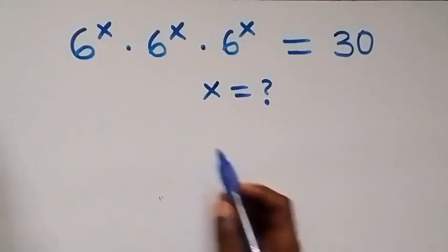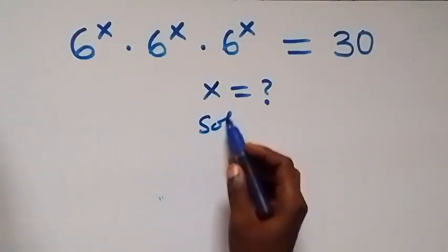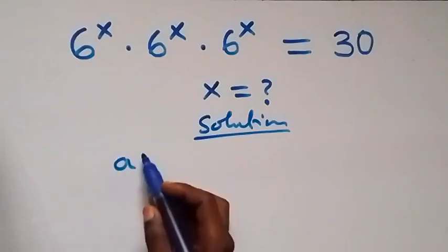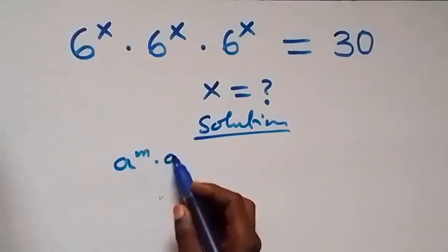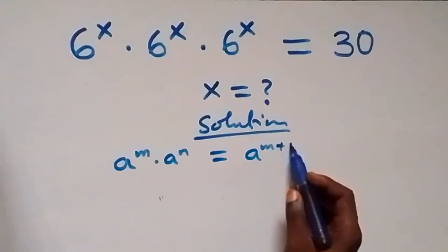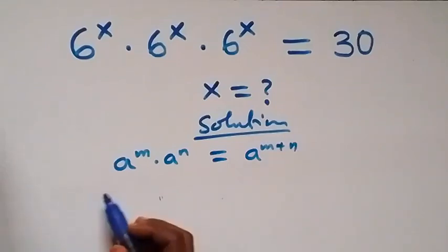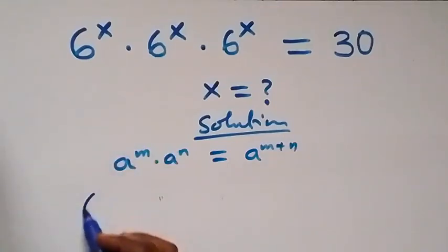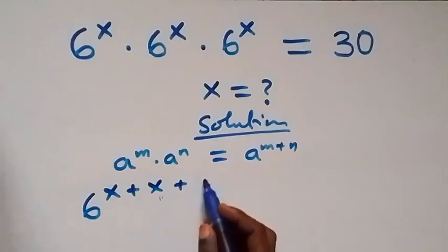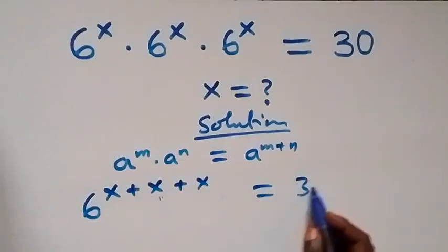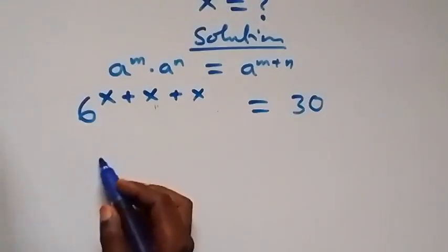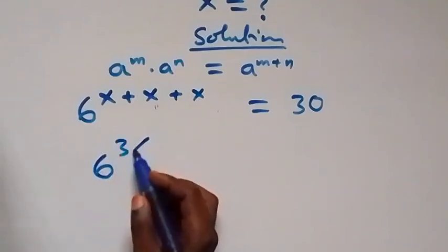Hello, welcome. How to solve this nice exponential equation. This follows from when we have a raised to power m and a raised to power n, which equals a raised to power m plus n. So what we have can be written as 6 raised to power x plus x plus x equals 30, which is the same as 6 raised to power 3x.